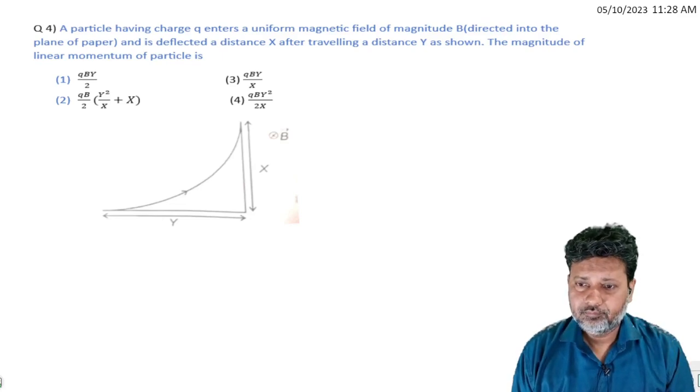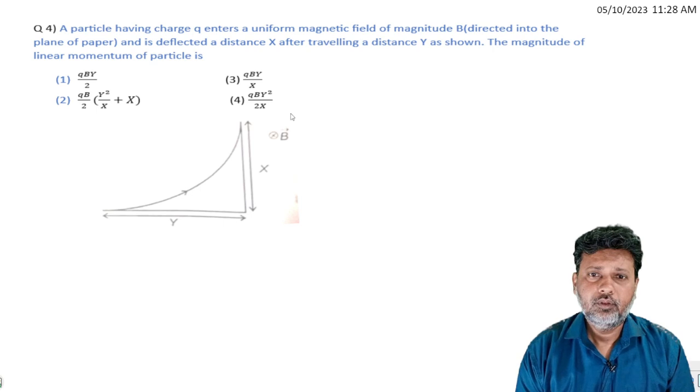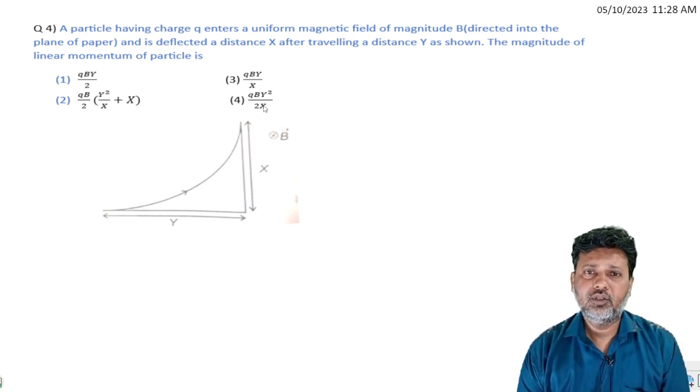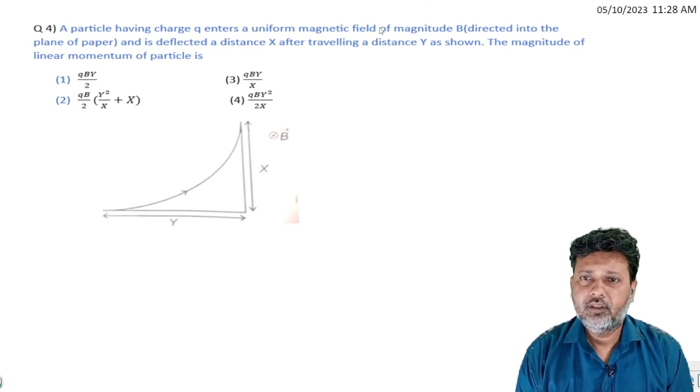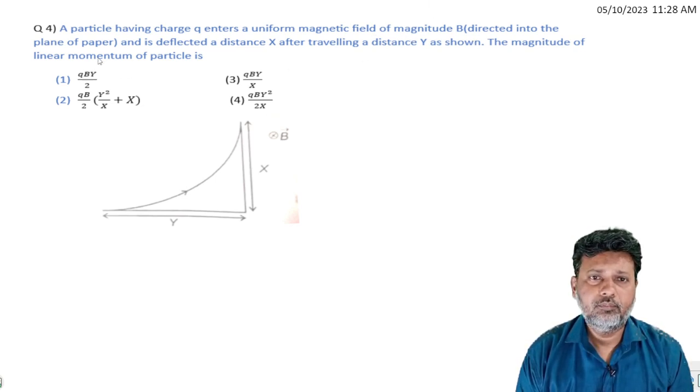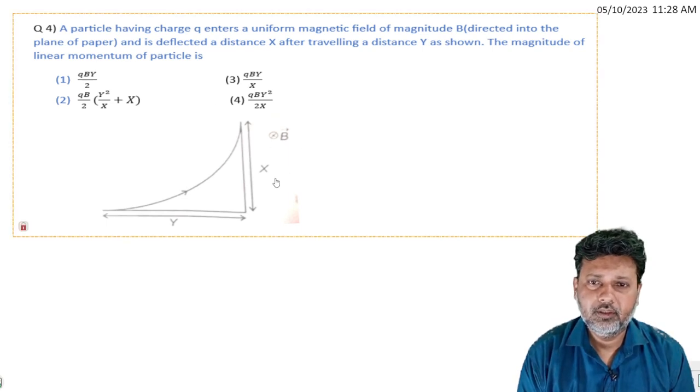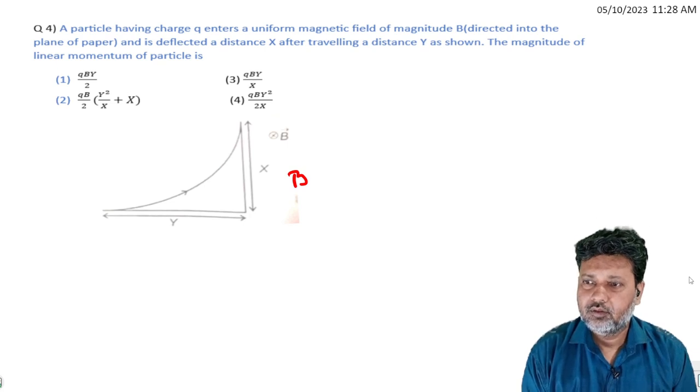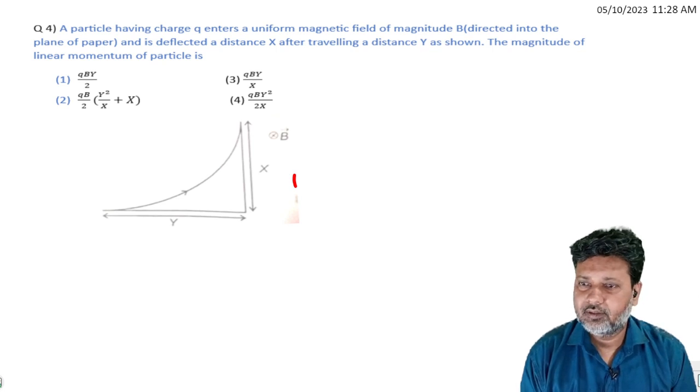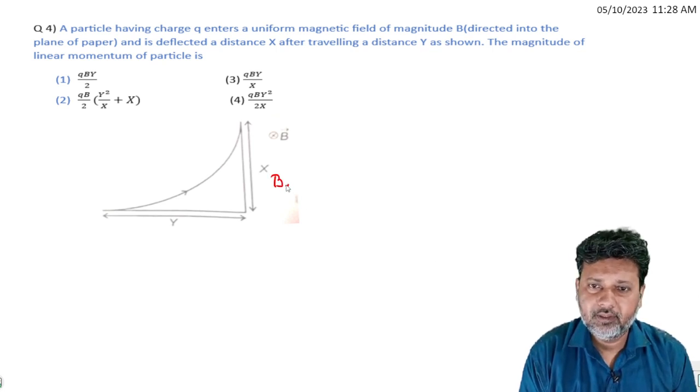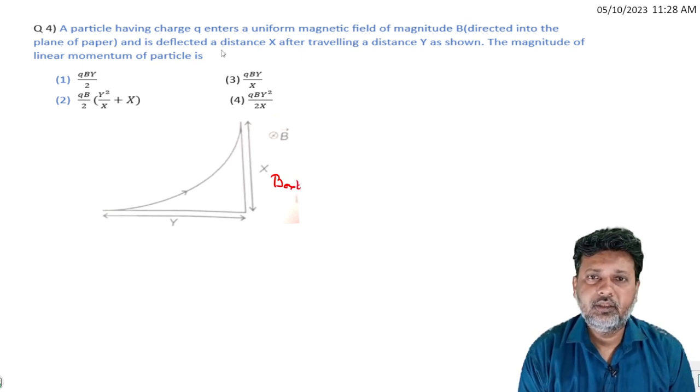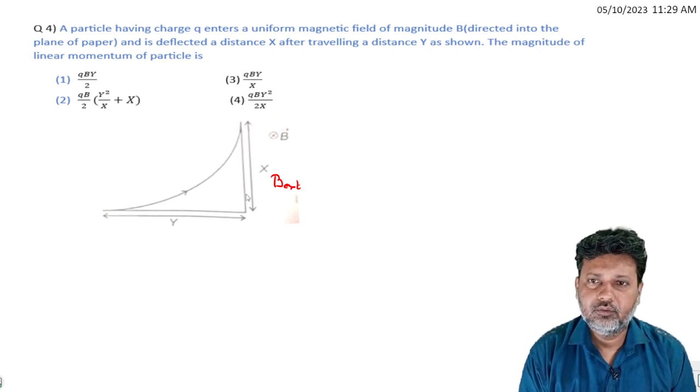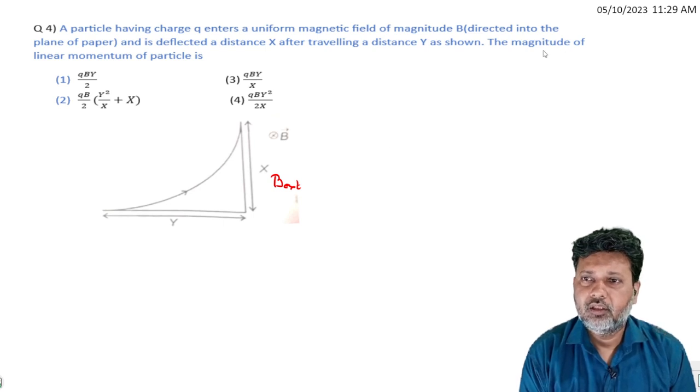Starting with this question: a particle having charge q enters a uniform magnetic field. The magnetic field can be directed into the plane of paper, so the magnetic direction is inward. The particle is deflected a distance x after traveling a distance y. We need to find the magnitude of linear momentum.